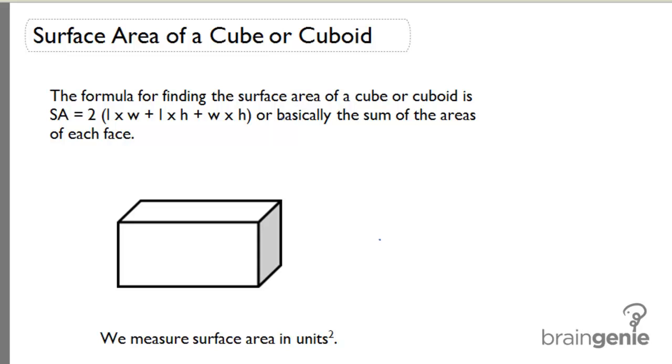Or we sometimes say in math, it's basically the sum of the areas of each face. So if you take the areas of all the faces of a cuboid, remember a cuboid always has six faces. If we take the areas of all six of those faces and add them up, we would get the total surface area of the cube or the cuboid.